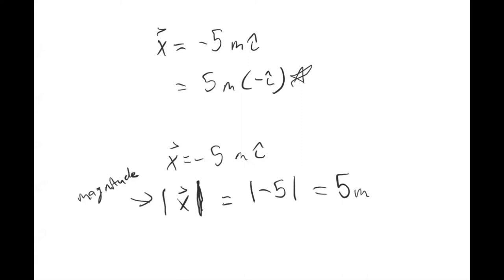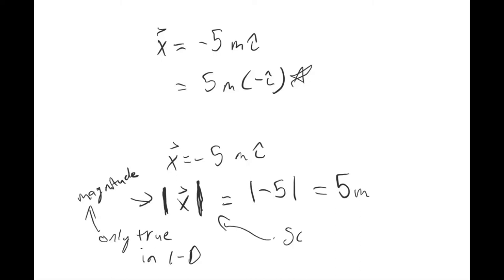We can put the negative sign out front just to tell you right away that you're in the negative direction, but that means the same thing as five meters in the negative x direction. Note that this definition of magnitude is only true in one dimension. Next week when we go into two dimensions, we'll see how to find the magnitude for a two-dimensional vector. When you find the magnitude of something, it's no longer a vector — it becomes a scalar.